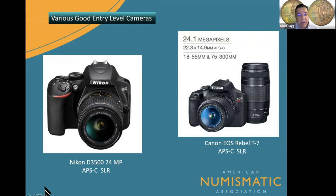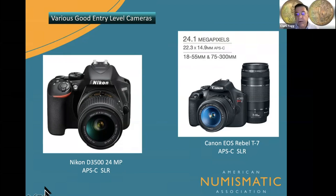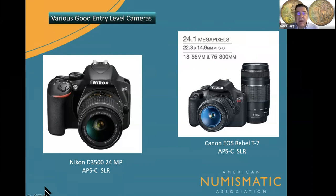A Nikon D3500 is a really good entry-level camera — 24 megapixel, interchangeable lenses, a nice viewfinder screen on the back, and it attaches onto a copy stand very nicely. The Canon EOS Rebel is similar. Both can be picked up at Costco or big box warehouse stores. Nothing is wrong with them. The kit lenses they include are probably not the ideal lens to use in coin photography — they will work, but they're not what you'd want for close-up photography.